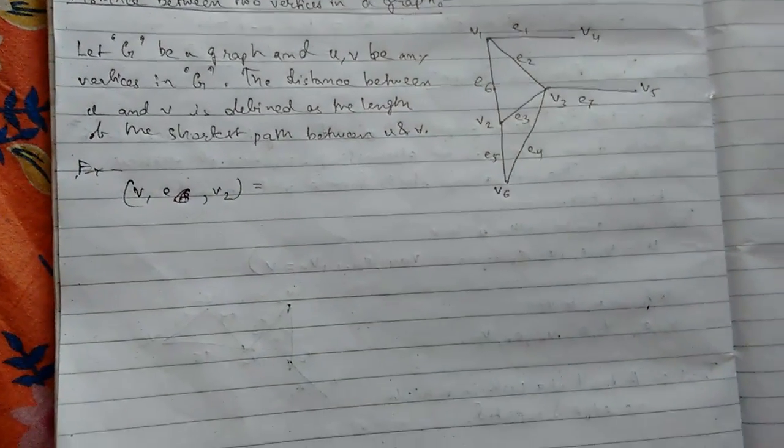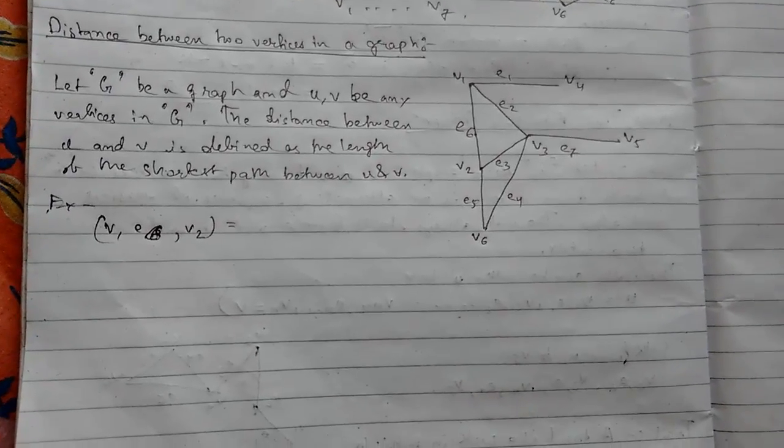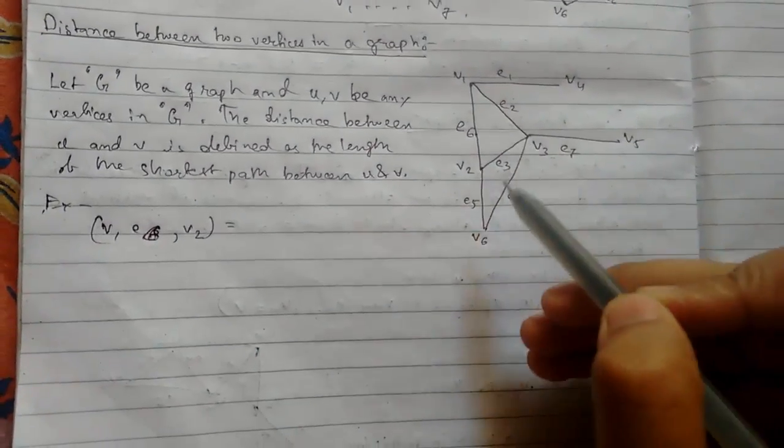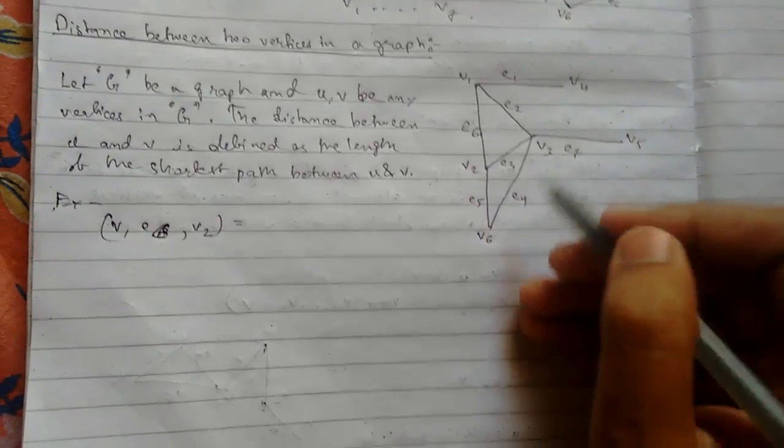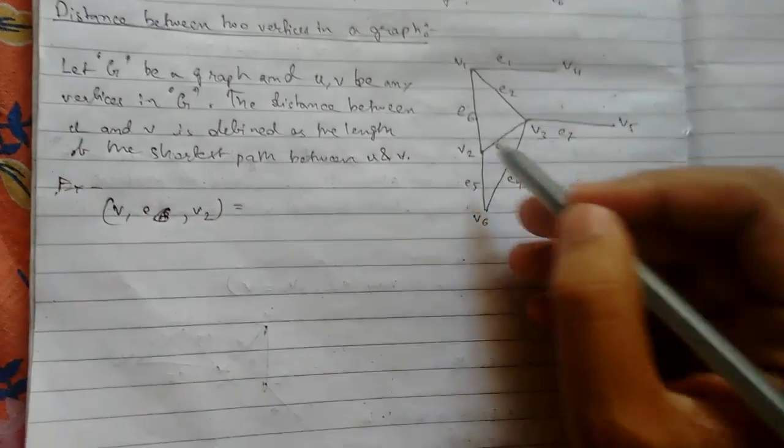Shortest path is the distance between two vertices. So v1 and v2 with e6. The shortest path we can cover is easily equal to 1.